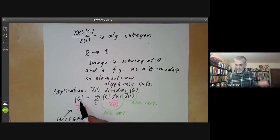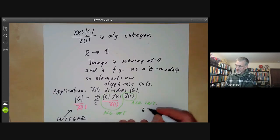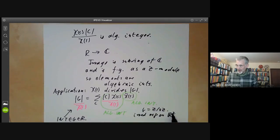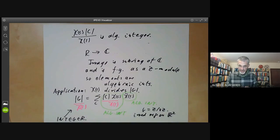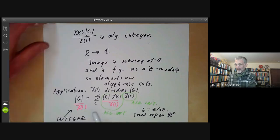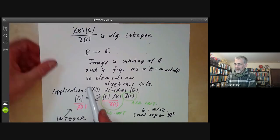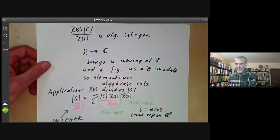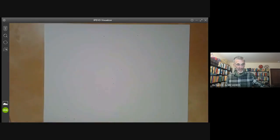This only holds for complex representations. For example, if G is the group of order 3, it has an irreducible representation on a two-dimensional real vector space — you can just rotate by a third of a revolution — and the dimension is 2, which does not divide the order of G, which is 3. This also fails for algebraically closed fields of characteristic greater than zero: the dimension of an irreducible representation need not divide the order of the group.